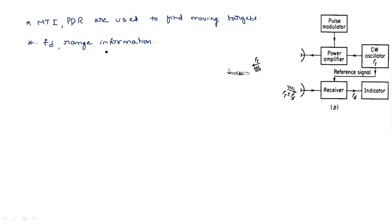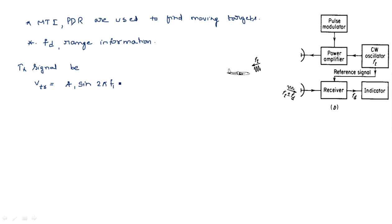Let us consider the transmitted signal V_TR is equal to A1 sin(2π f1 t), where A1 is the amplitude and f1 is the frequency of the transmitted signal.